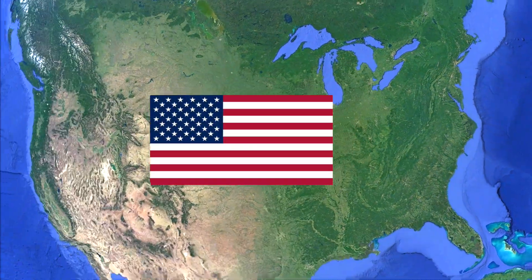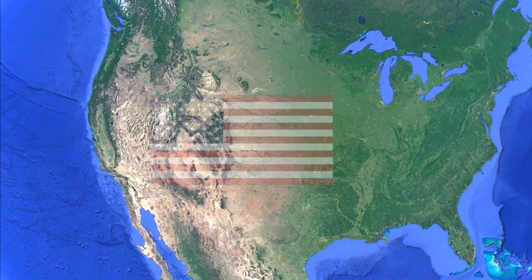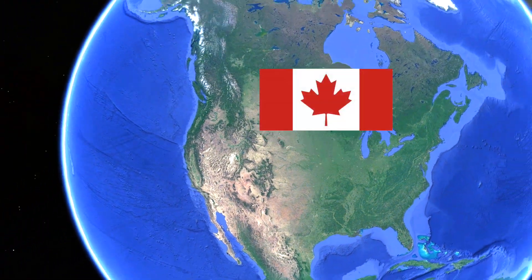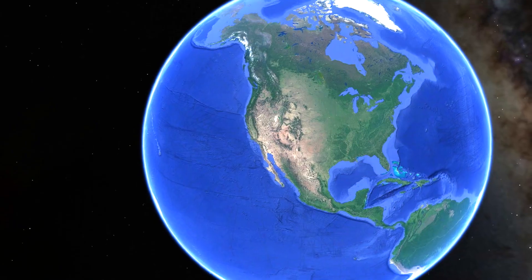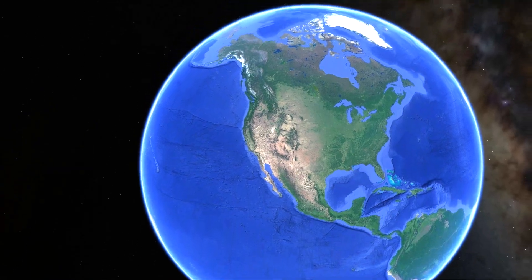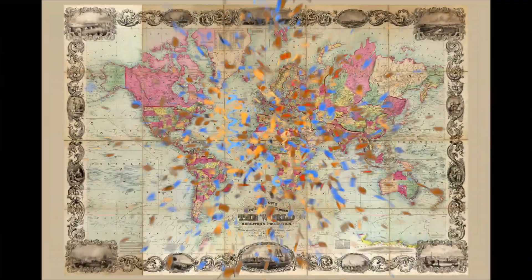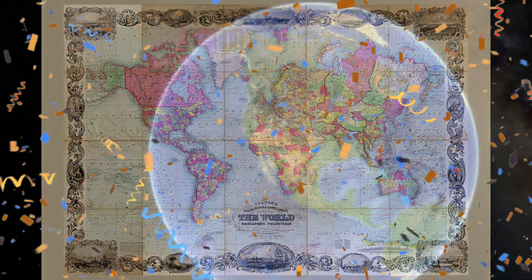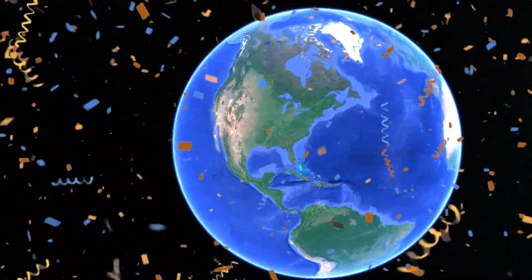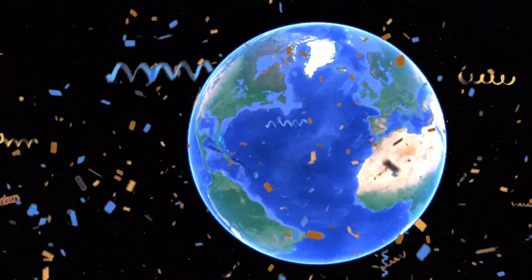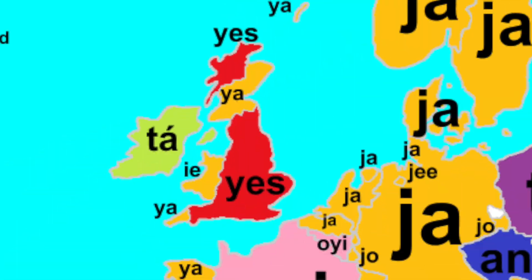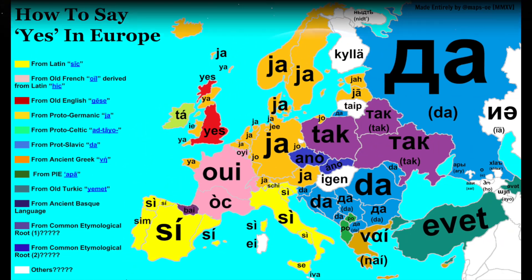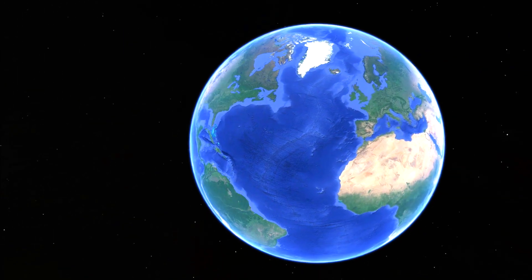This is the United States, and this is Canada, and this is the world — a map of the world. Maps tell us a whole bunch of stuff. And today, we're going to look at a bunch of different maps from all around the world.